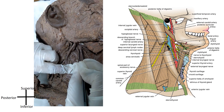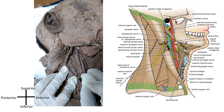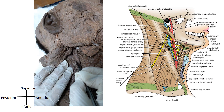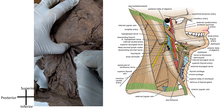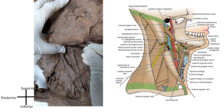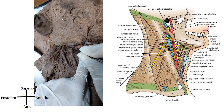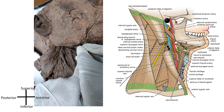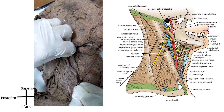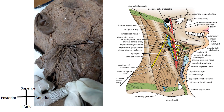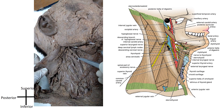There are branches of the external carotid artery as contents of the carotid triangle. One artery going downward is the superior thyroid artery. Going above, you can see the lingual artery arising from the external carotid artery — identifiable by the hypoglossal nerve running superficial to it. Running behind, between the common carotid artery and jugular vein, is the vagus nerve.